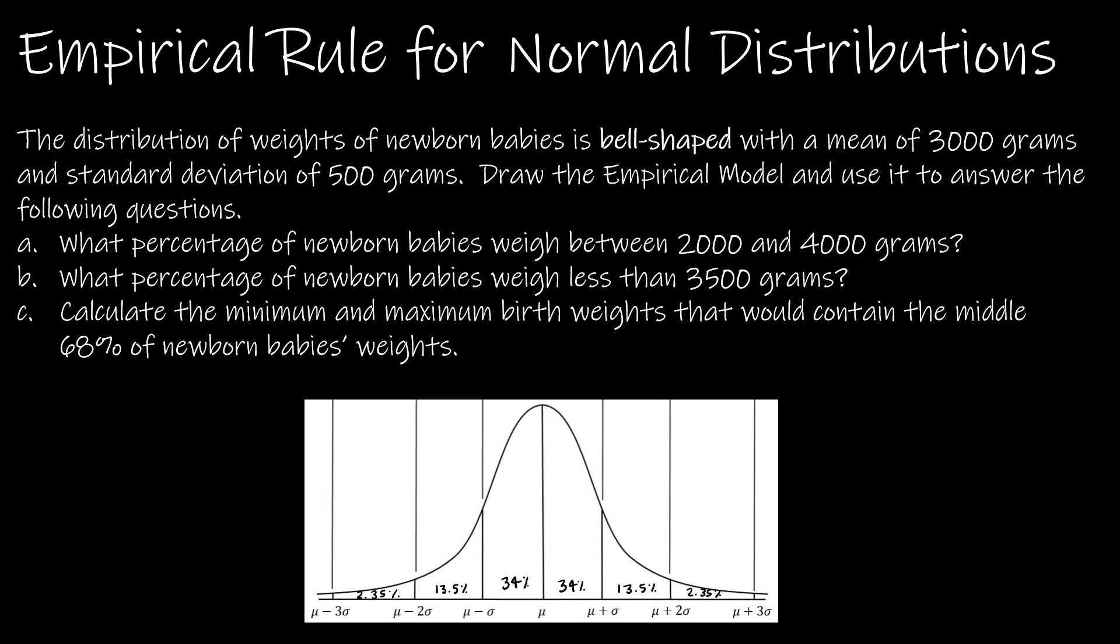Let's take a look at a question that involves the empirical rule. It says, the distribution of weights of newborn babies is bell-shaped. So that's telling us it's normal with a mean of 3000 grams and standard deviation of 500 grams. Draw the empirical model.